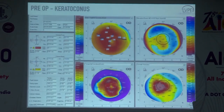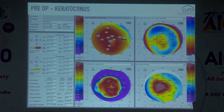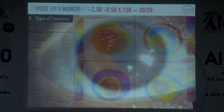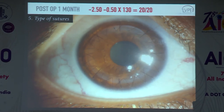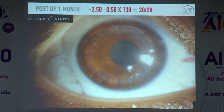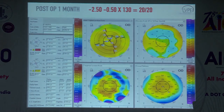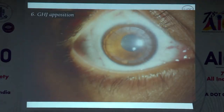In keratoconus with a relatively large cone, post-op with a large graft and continuous sutures: this patient achieved 20/20 in one month with very low astigmatism — this is what continuous sutures give when the patient is old enough. In keratoconus, the periphery can be thick, so sutures must be deep enough for good graft apposition, which keeps astigmatism low.